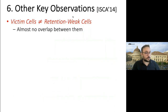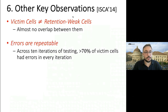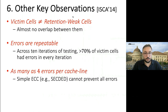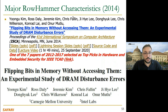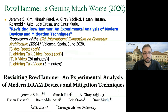We have some other key observations: RowHammer bit-flips are not necessarily correlated to retention widths; RowHammer bit-flips are repeatable; as many as four errors per cache line can be observed; therefore, simple single-bit ECC cannot prevent all errors; and cells are affected by two aggressors on either side. This is the summary of the flipping bits paper from 2014, the characterization part.